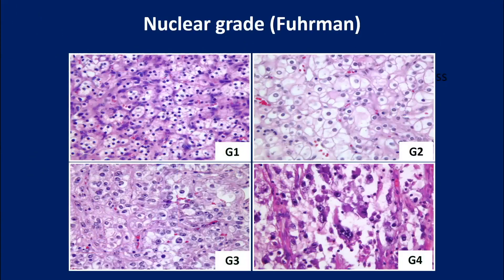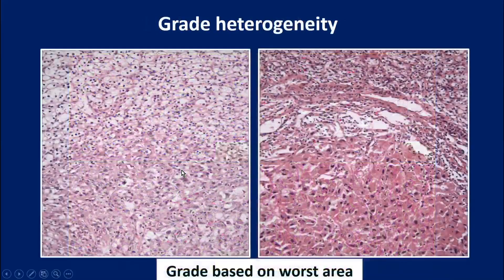You're all familiar with the Furman grading system. It has been around for almost half a century. There are four grades, G1 to G4. However, you're also aware that there is grade heterogeneity and that the grade is typically based on the worst areas, as illustrated in these examples.